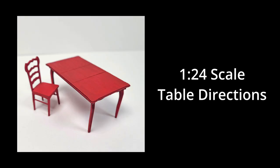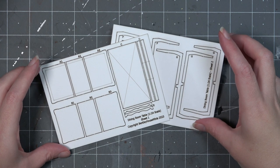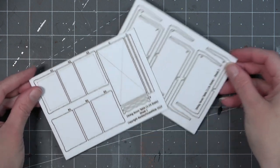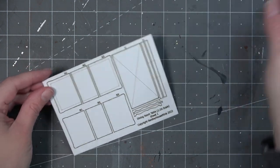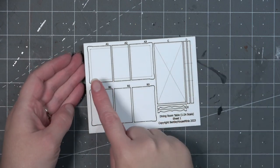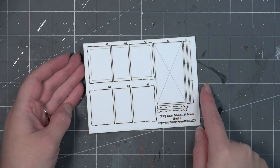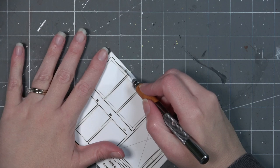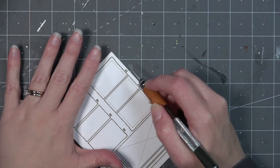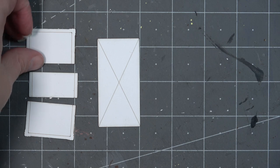Now we're going to move on to the 1:24 scale table directions. Unfortunately the 1:24 scale is not a removable leaf table but it can still have the appearance of one. The kit comes with two laser cut cardstock pieces and we're going to start with all of the A pieces and the piece marked C. Cut those out with a sharp craft blade.